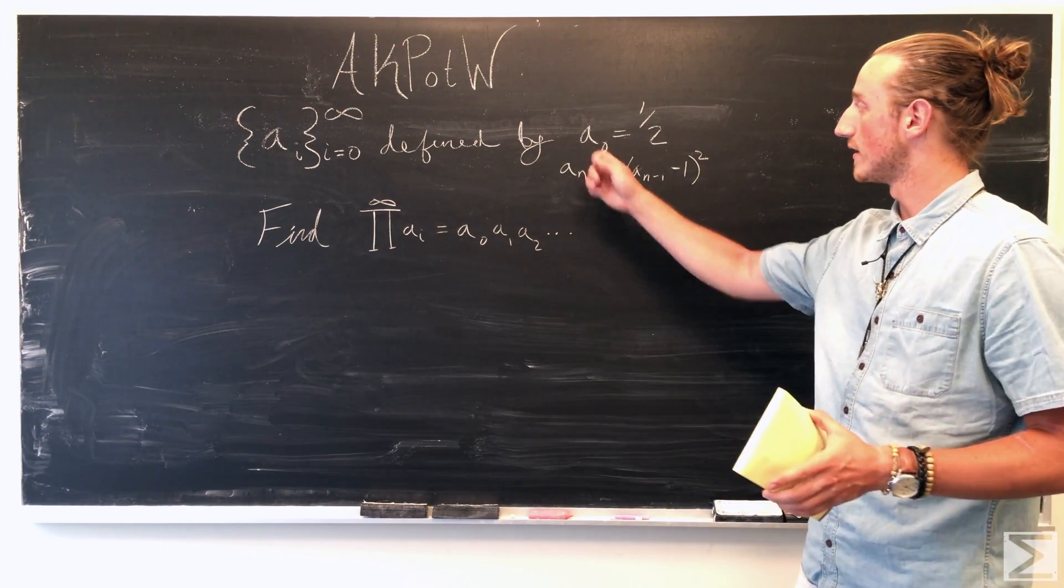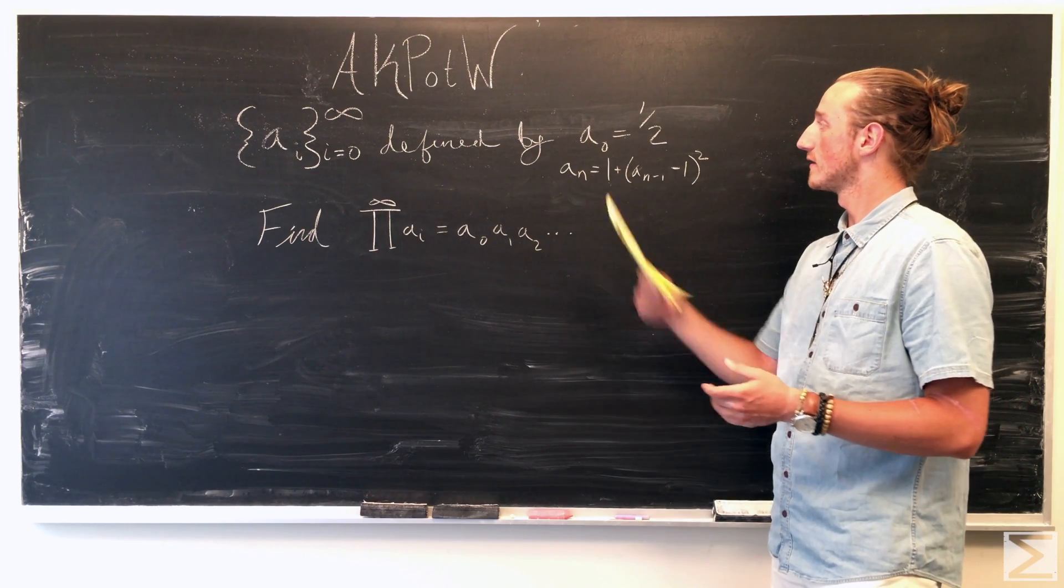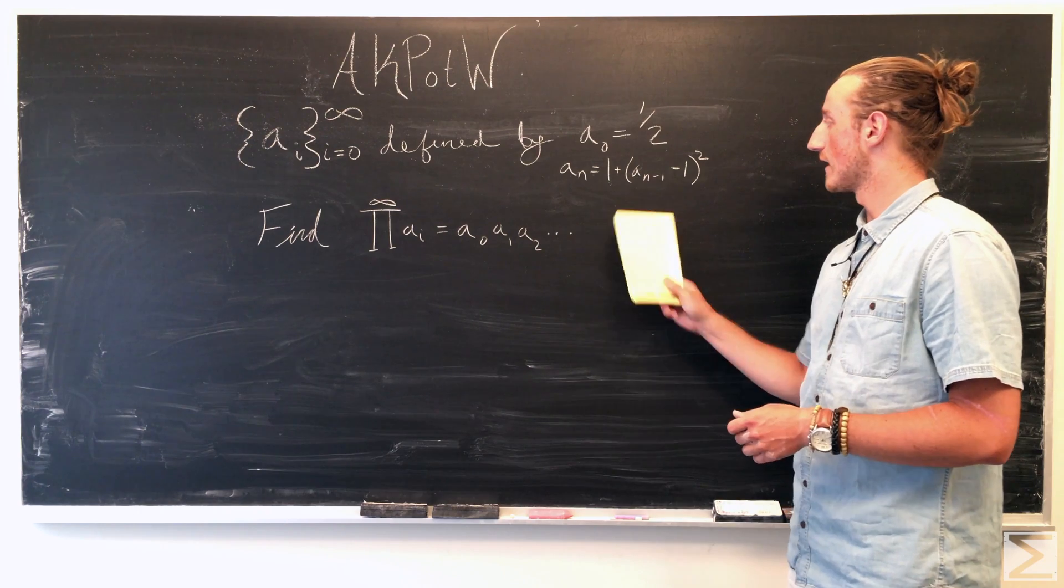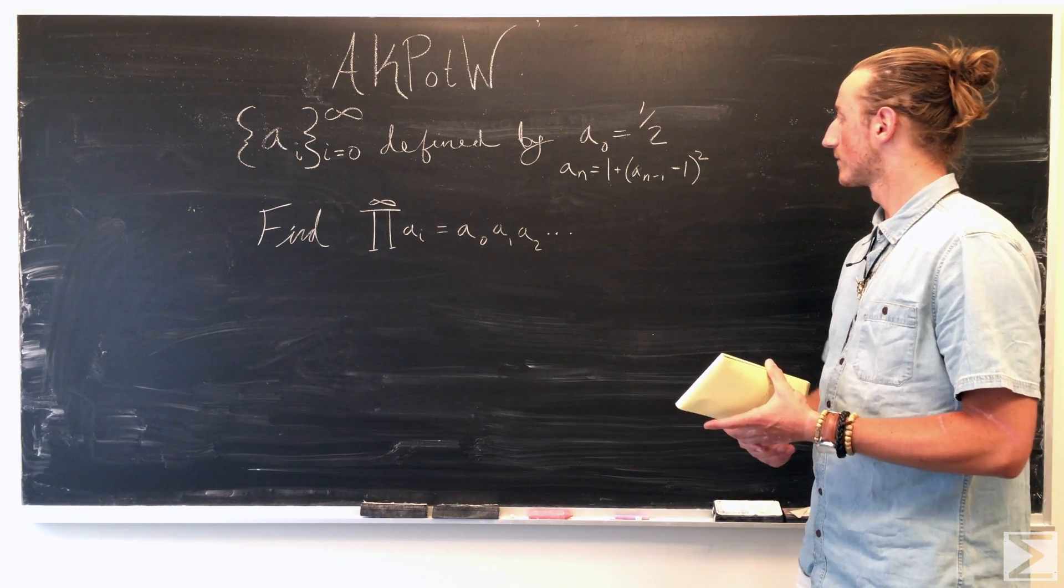This sequence is defined by a naught is equal to one-half, and then a of n is one plus a of n minus one, minus one squared.